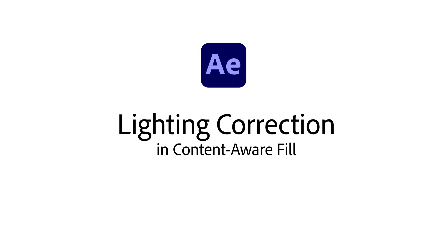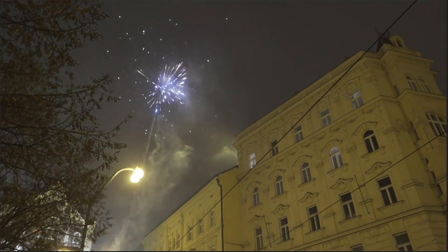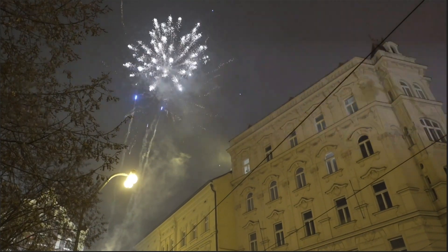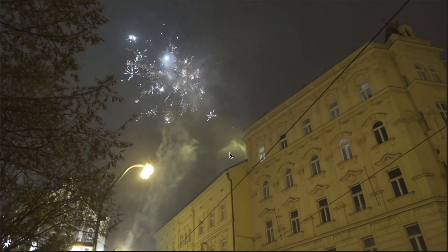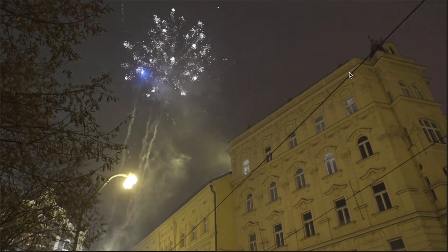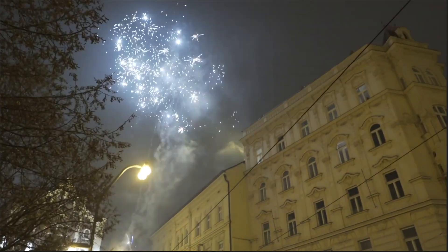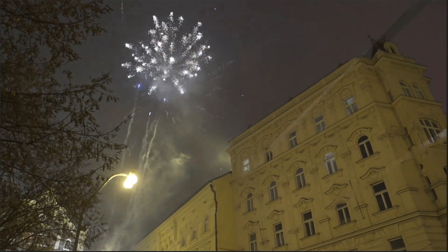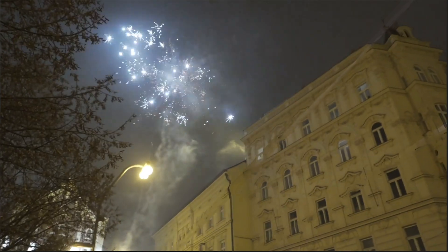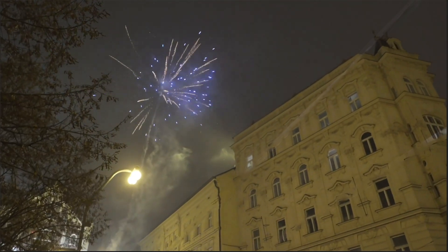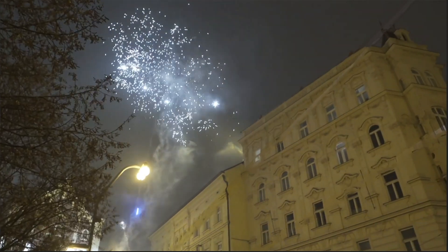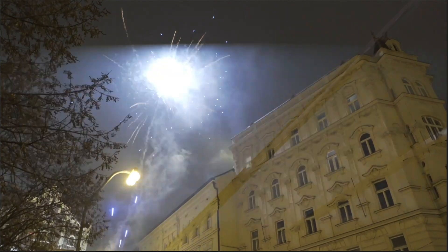Content-Aware Fill in After Effects now has Lighting Correction, which compensates for changing lighting conditions in your footage. Here I have a shot of some fireworks, and I used Content-Aware Fill to delete these telephone wires. But because of the changing lighting conditions in the sky, I get a stripe of light in the Fill layer.